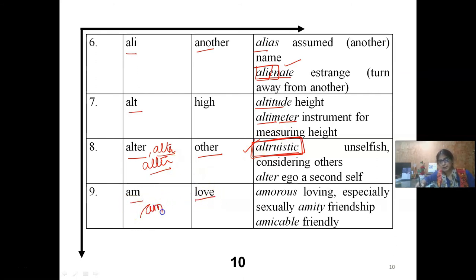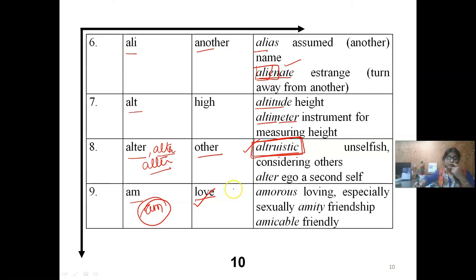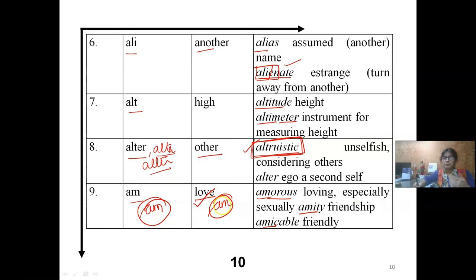If we look at ALTRUISTIC from its root, it means 'another' — considering other options. AM means 'love.' All words starting with AM have a basic meaning of love. AMOROUS means loving, caring — AM means love. AMITY means love. AMICABLE means friendly — love in a friendly sense. So AM means love.